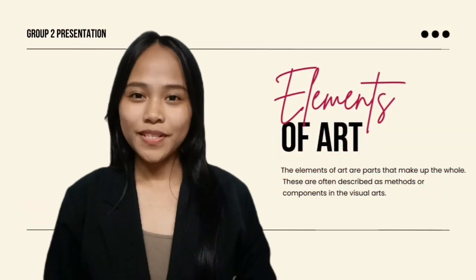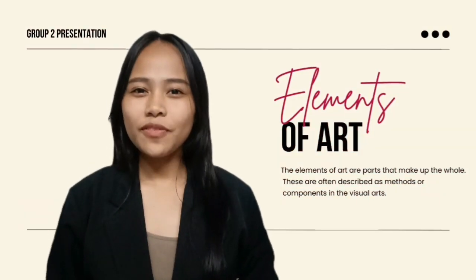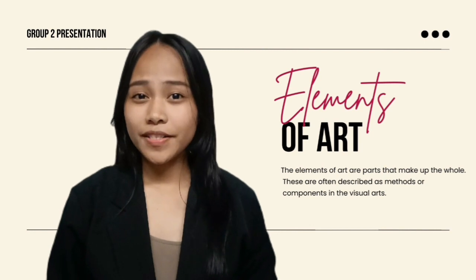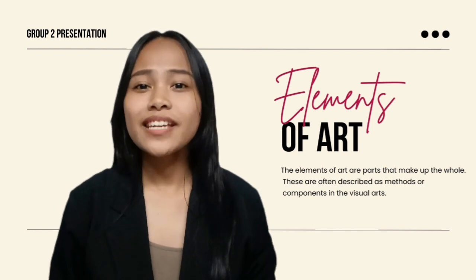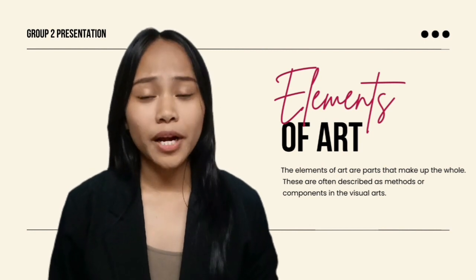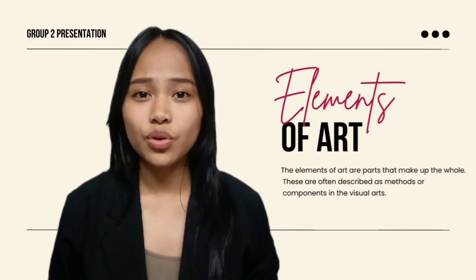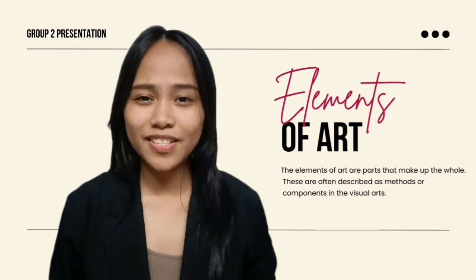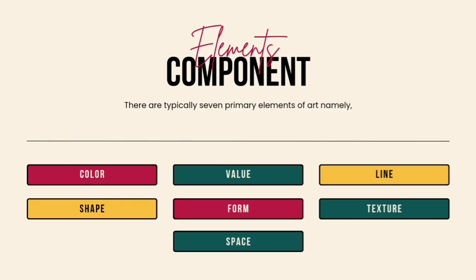In simple terms, the elements of art are parts that make up the whole. These are often described as methods or components in the visual arts. There are typically seven primary elements of art, namely color, value, line, shape, form, texture, and space.